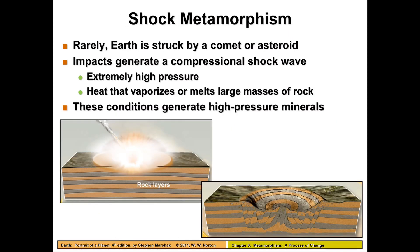Shock metamorphism happens when an asteroid or comet hits the Earth. It doesn't really produce foliated or non-foliated rock — it produces something entirely different. Comets and asteroids can hit the Earth at 10,000 to 20,000 miles per hour, so very quickly. They tend to vaporize a lot of the surrounding rocks, but some rocks that can withstand the impact turn to glass under the high pressure and high temperature. We find a special rock called shocked quartz, where quartz melts very quickly into a very dense glass. This is actually what we find scattered all over North America as a result of the asteroid that collided at the end of the Cretaceous when the dinosaurs went extinct.